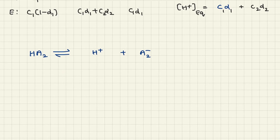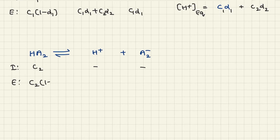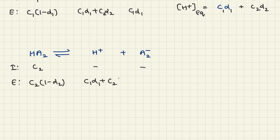For the second acid, initially the concentration is C2 and the ion concentration is 0. At equilibrium, the concentration of HA2 is C2(1 − α2), the H+ concentration is again C1·α1 + C2·α2, and the A2− concentration is C2·α2.